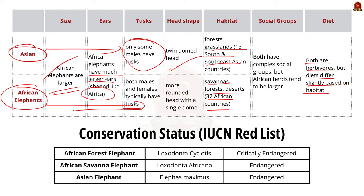One more important thing to note is the IUCN status. The African forest elephant is critically endangered, the African savanna elephant is endangered, and the Asian elephant is also endangered. That's all about the major differences between the Asian and the African elephant.